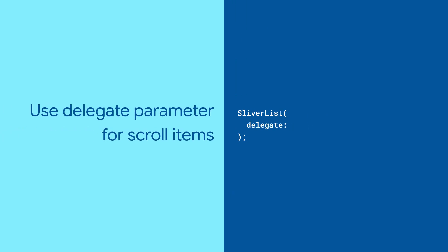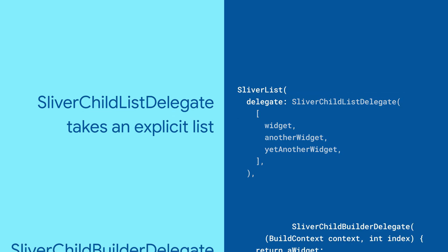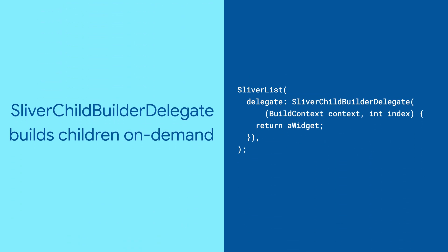SliverList takes a delegate parameter which provides the items in the list as they scroll into view. You can specify the actual list of children with a SliverChildListDelegate, or build them lazily with a SliverChildBuilderDelegate.